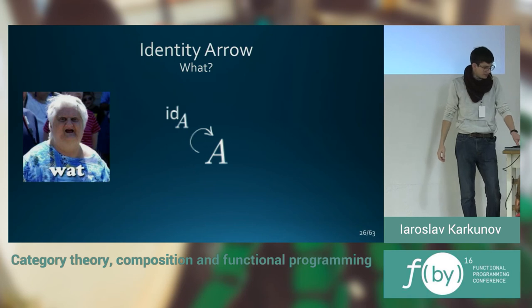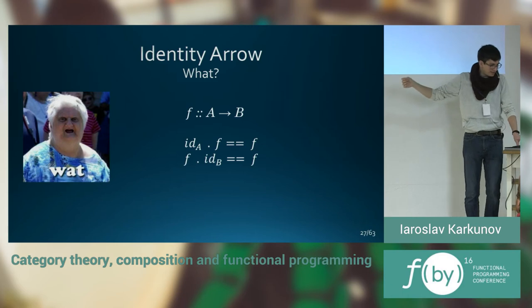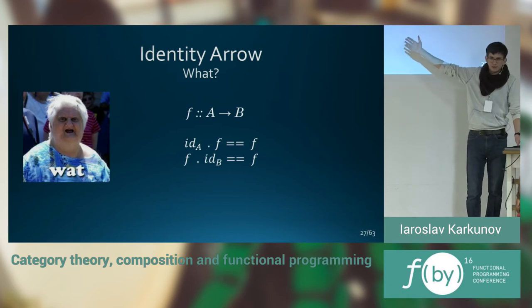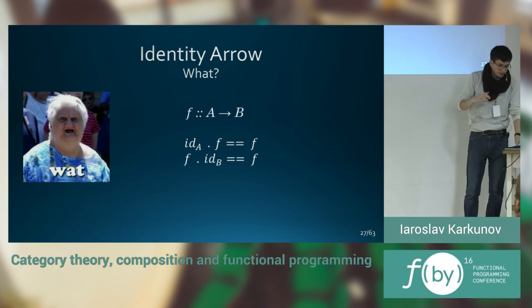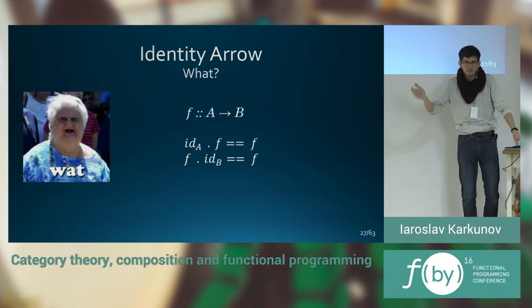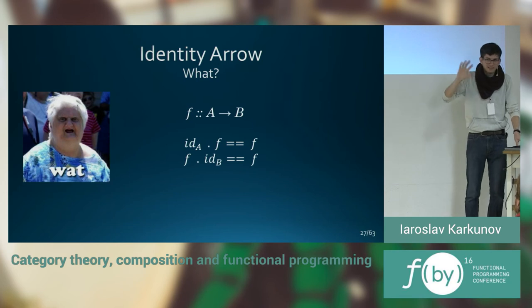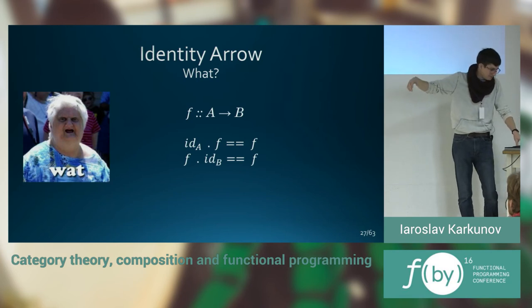Also, we need to have identity arrows. Identity arrows are arrows from an object to the same object, which does nothing, actually. The does nothing property is actually those equations. It means that if you take any other arrow from that object to any other object and compose it with the identity arrow, we will have the same action. It's kind of zero. It's kind of zero for composition. If you make an analogy with addition, for example.